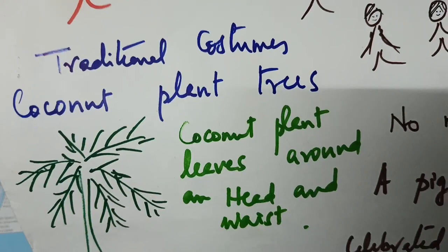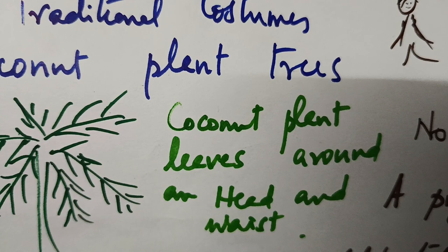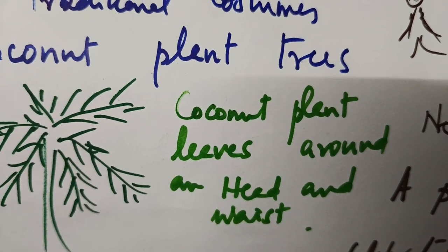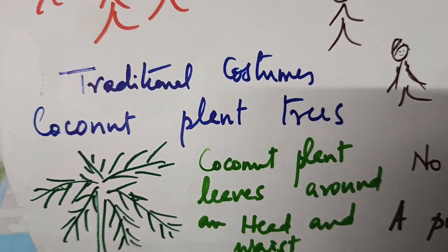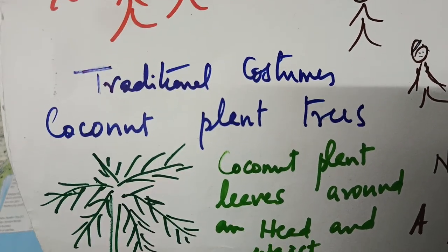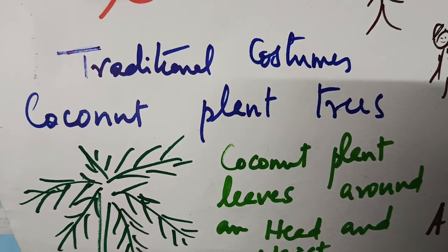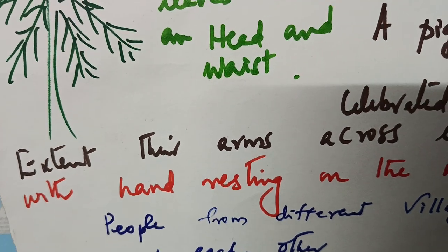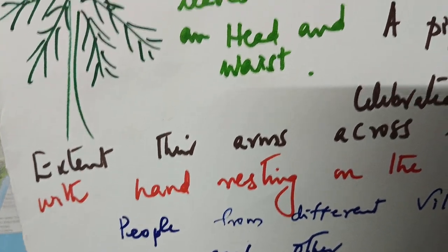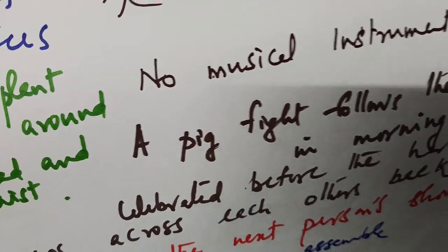Regarding their costumes, they are using coconut plant leaves around their head and waist. That is the major costume, which is distinct from other dances. The props are also from the coconut tree. Another important thing is that there is no musical instrument.